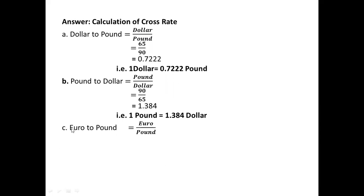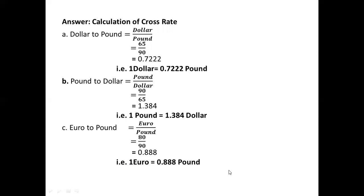Then, (c) Euro to Pound — when we find the Cross Rate between Euro to Pound, the formula will become: Euro divided by Pound. Euro is 90 Rupees and Pound is 90 Rupees. The answer is 1 Euro equals to 1.000 Pound — or based on the given values, 1 Euro equals to approximately 0.388 Pound. This is how we calculate the Cross Rate. Thank you.